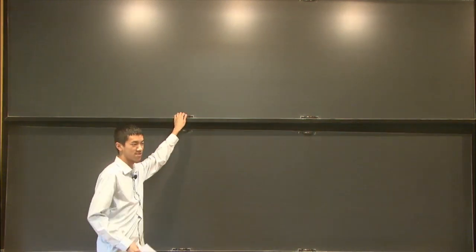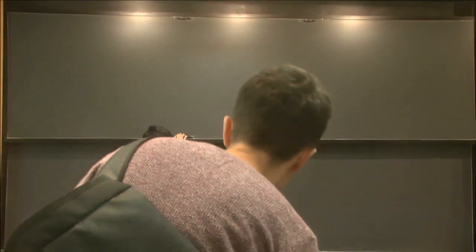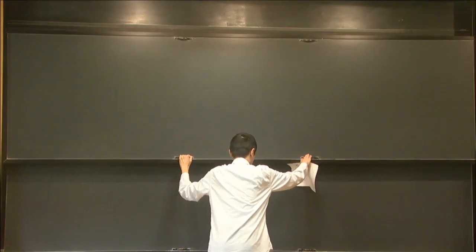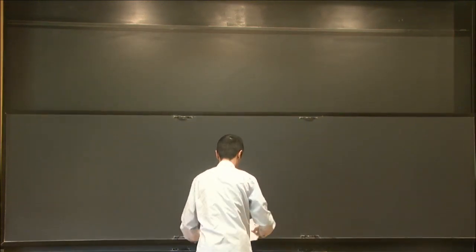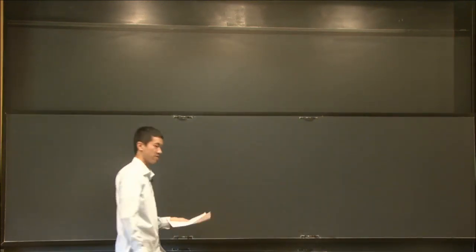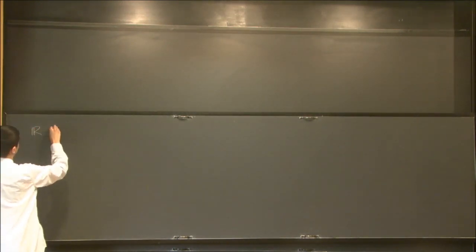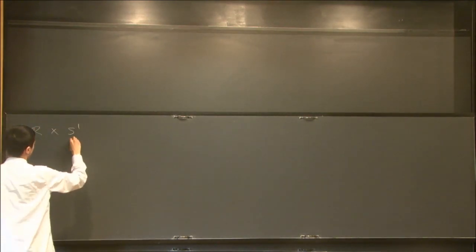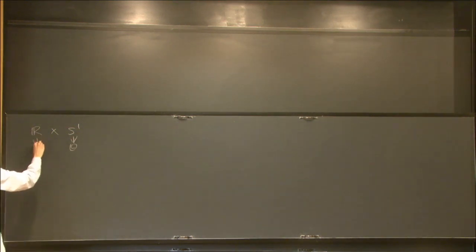Because this is a general audience talk, I'd like to start from a model problem, my research of interest. The model problem is this: we start from R cross S1, and let theta be a coordinate, let R be another coordinate.